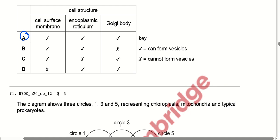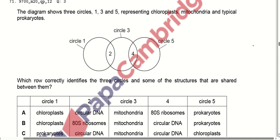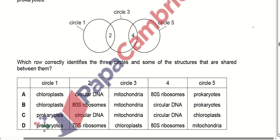The diagram shows three circles — 1, 3, and 5 — representing the chloroplast, mitochondria, and typical prokaryotes. Which row correctly identifies the three circles and structures shared between them? Circle 1 represents prokaryotes, the simplest organisms. Circle 2 shows circular DNA shared between two of them. Circle 3 shows mitochondria. Circular DNA is shared in some cases and chloroplasts in others. Option C is correct.